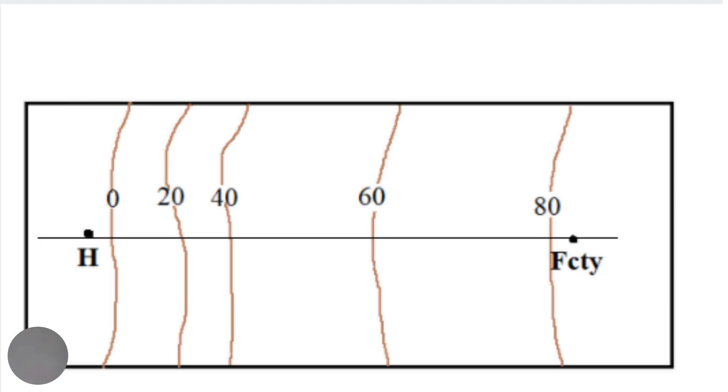But a convex slope is one where the land is steeper at the bottom of the slope and gentler at the top of the slope. And so before we even draw our cross section, we know exactly what we are supposed to expect to see.